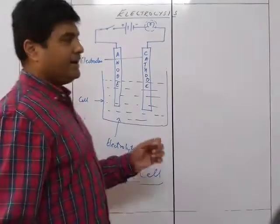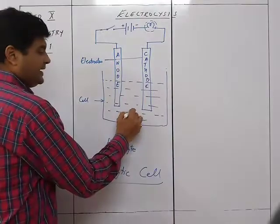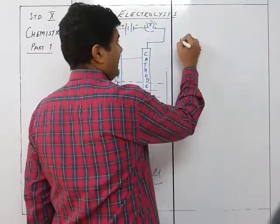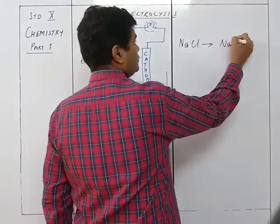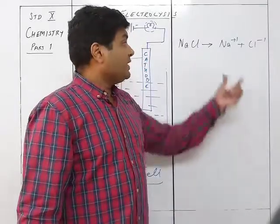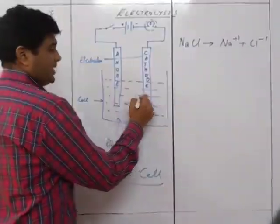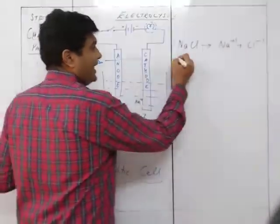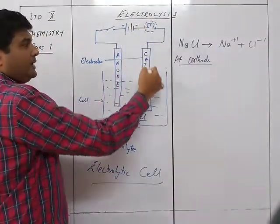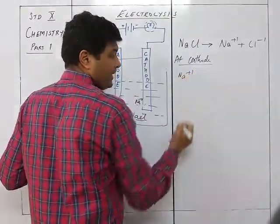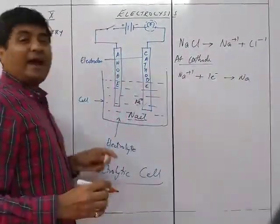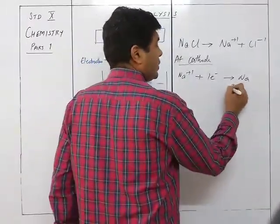Let's understand this in detail. In the electrolysis of NaCl — aqueous or molten — NaCl dissociates into Na⁺ and Cl⁻. Na⁺ comes to the cathode. At the cathode, electrons come from the electrode, so Na⁺ gains one electron and becomes neutral Na. There is a gain of electron at the cathode, so it is called a reduction reaction.